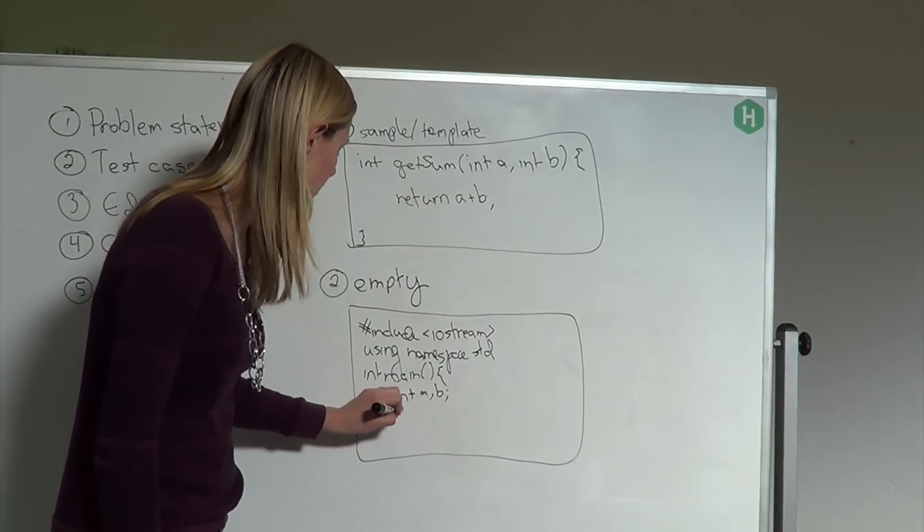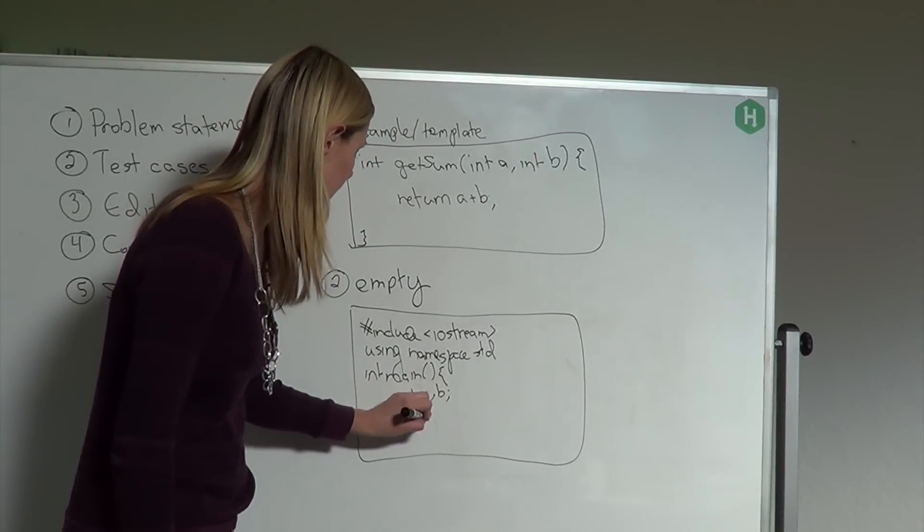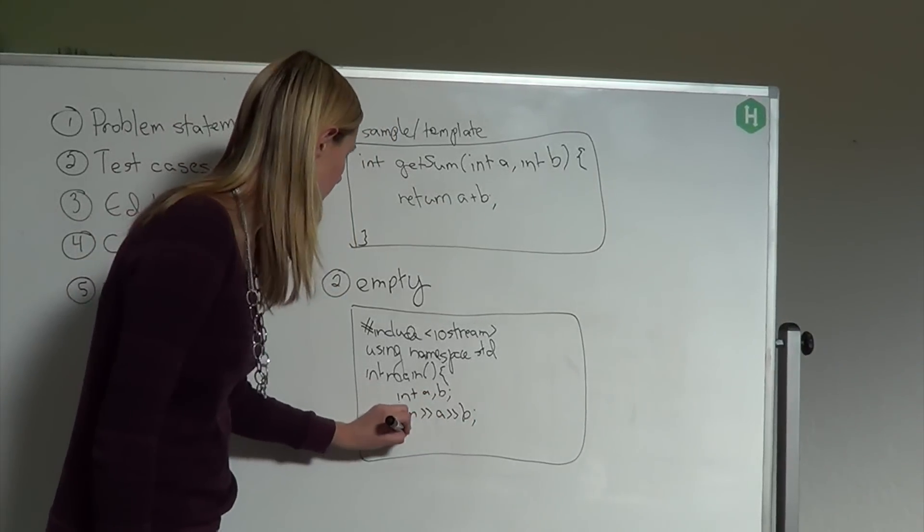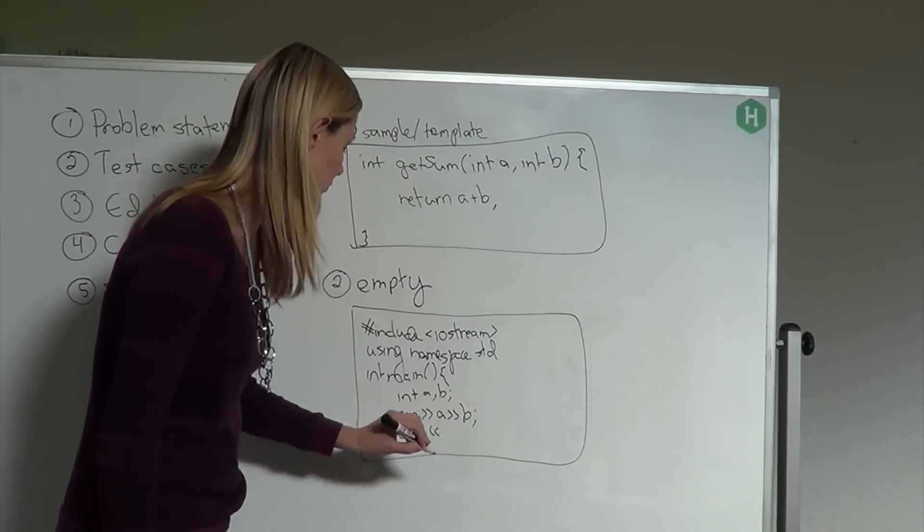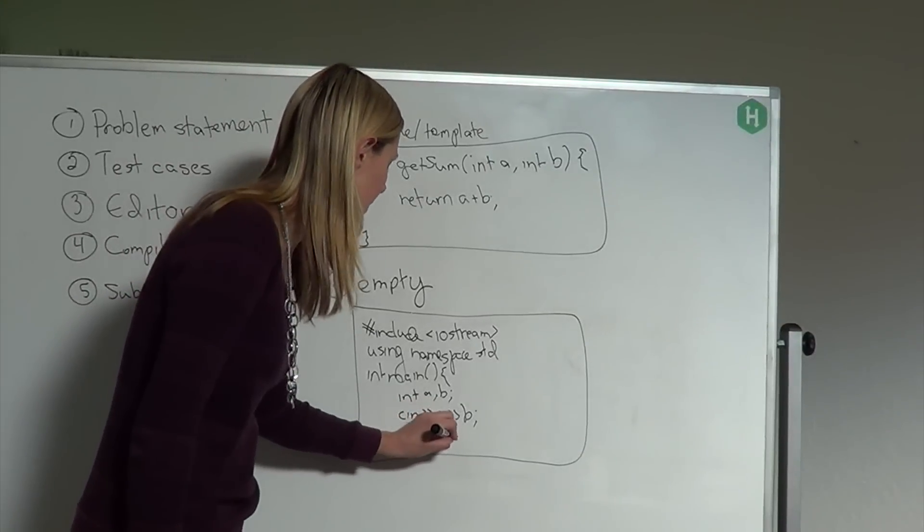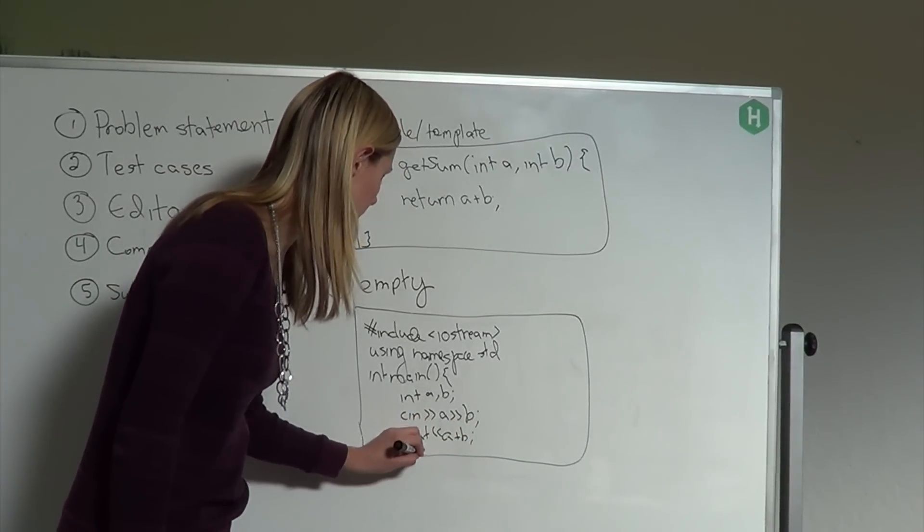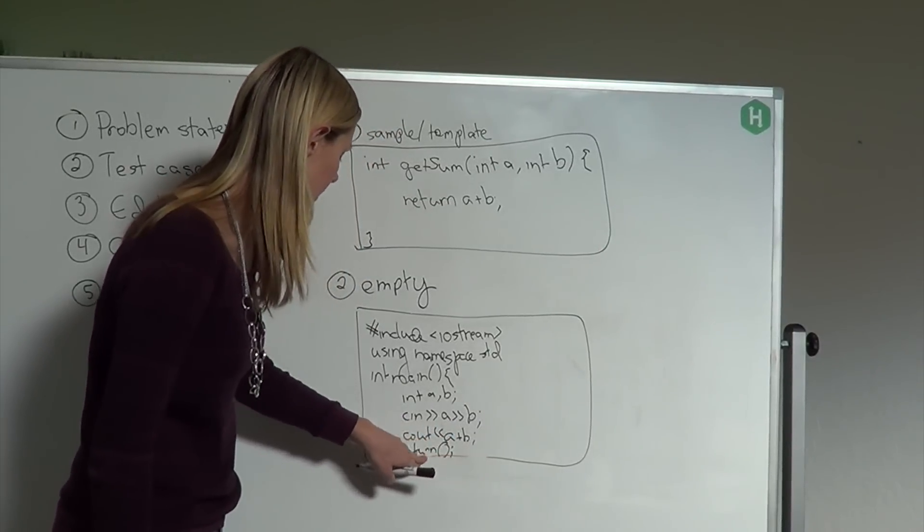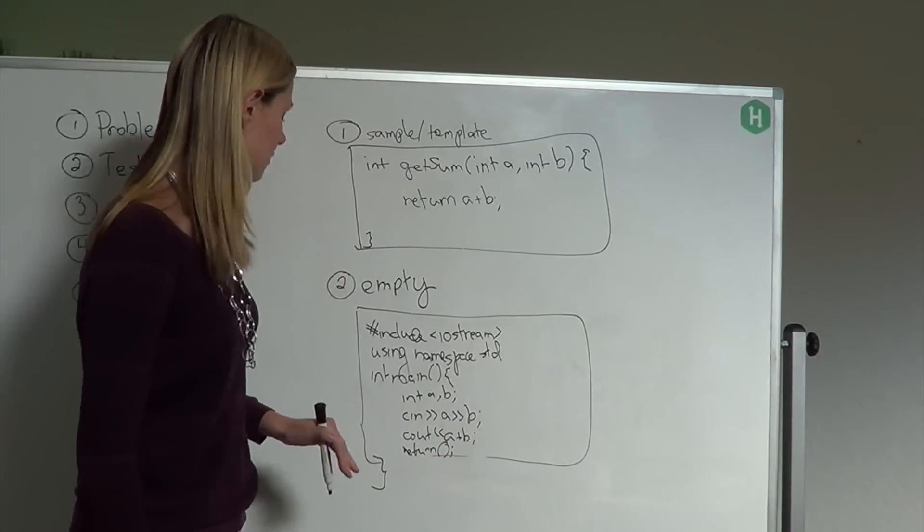You want to take your standard inputs and outputs. So int a, b, and then you're going to use cin and cout. So you take your inputs in our little trivial example, and now we're just going to output the sum. And of course, we need a return zero and then close our function.